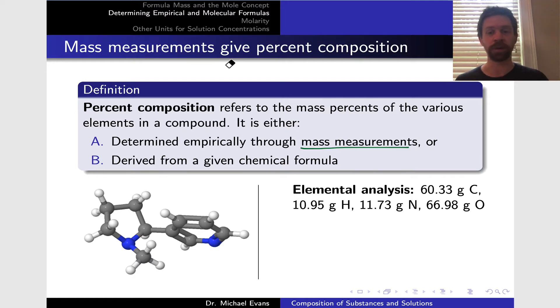It's either determined empirically through mass measurements—we'll look at that on this slide in the bottom right—or it can be derived from a given chemical formula. Elemental analysis is an analytical technique that involves breaking a compound down into its elements and measuring the mass of each.